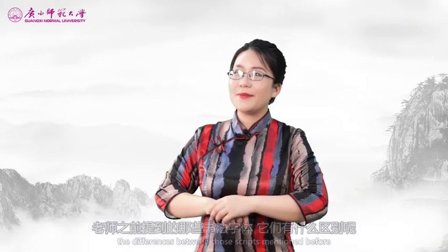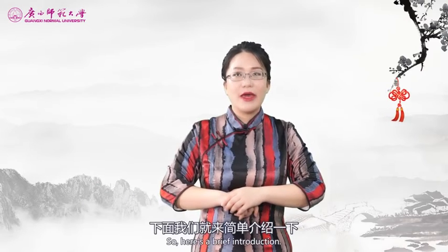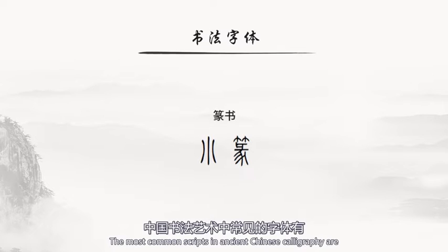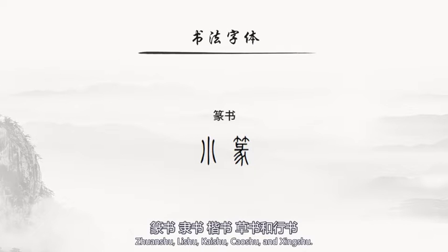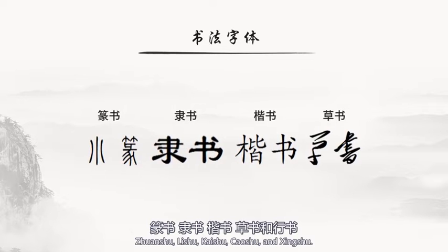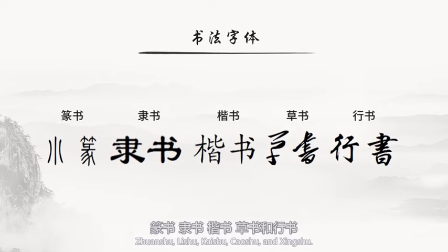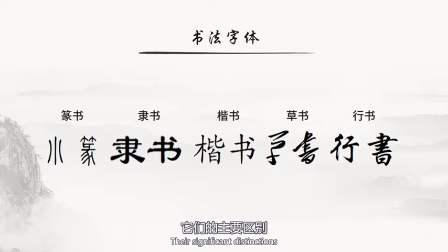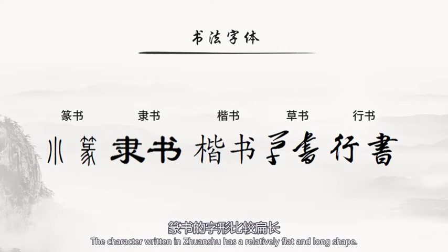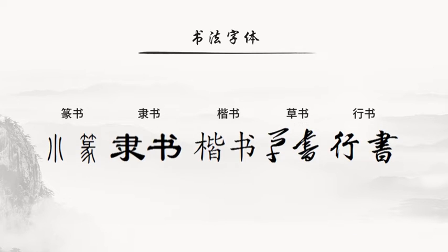看完了书法艺术的历史，好奇的同学可能会问：老师之前提到的那些书法字体，它们有什么区别呢？下面我们就来简单介绍一下。中国书法艺术中常见的字体有篆书、隶书、楷书、草书和行书，它们的主要区别从图片中大家也可以看出来，篆书的字形比较扁长。